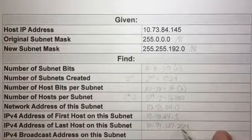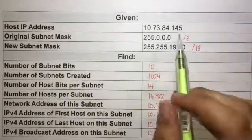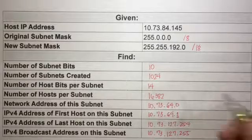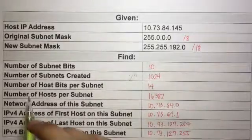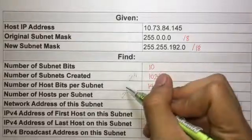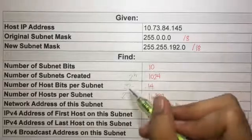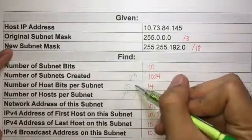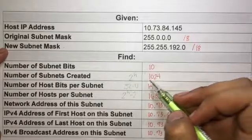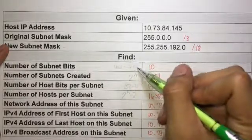The broadcast address is the last host plus one: 254 + 1 = 255, giving us 10.173.127.255. Always remember the formula for the number of hosts per subnet: 2 to the h minus 2. To find host bits, subtract the new subnet mask from 32, since there are four octets of 8 bits each giving 32 total bits. The number of subnet bits is found by subtracting the original subnet mask prefix from the new subnet mask prefix.